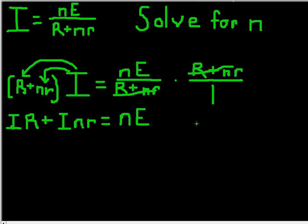So now what do we do? Well, just like in the other tutorial, we want to get these n's on the same side. And so what we should do is we should subtract this INR to move it over here. So we subtract it from both sides.